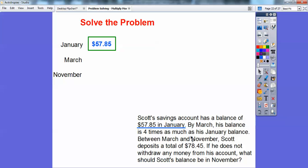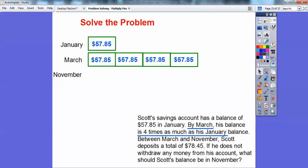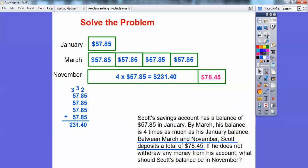We started with $57.85 in January. And then it says by March, his balance is four times that. So we're going to draw four of these with $57.85 in that. And then it says by November, he deposits an additional $78.45. So he has this much in there right now. So we're going to deposit that much more. This right here says four times $57.85 because there's four boxes over here. And I just added up over here $57.85 four times.